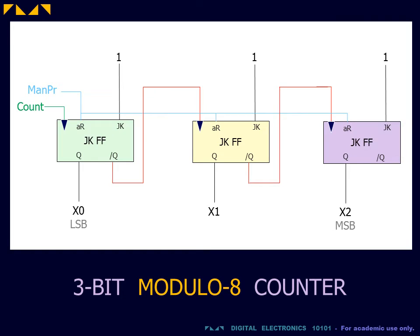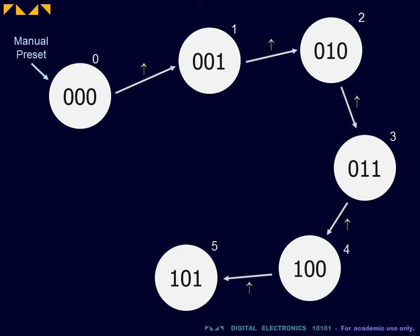We will construct our modulo 6 counter from a 3-bit modulo 8 counter, which is the next highest power of 2. This counter will count up the 3-bit counting sequence as before.